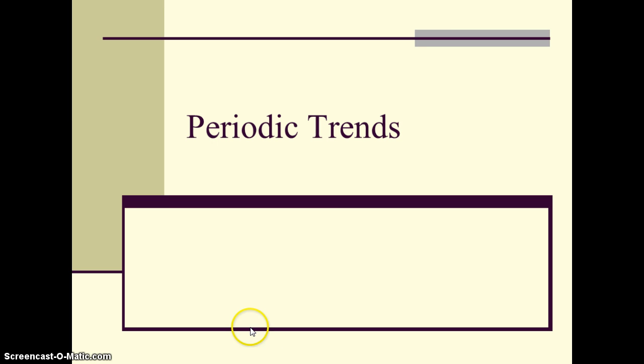Hello, IB students. Let's take a look at periodic trends. We're going to look for patterns within atoms and ions that we find on the periodic table, and we're going to define some of those terms that are used in exploring these patterns.